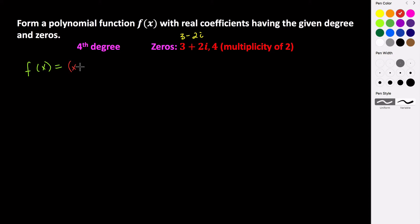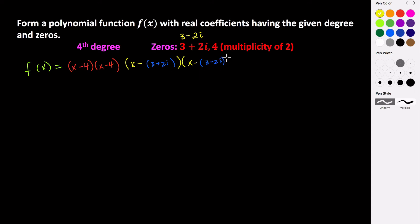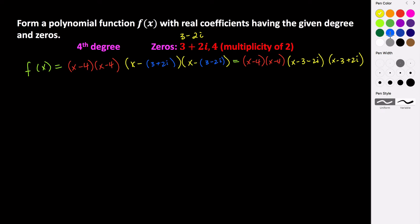Our first factors are going to be (x minus four) times (x minus four) — again, it happens twice because there's a multiplicity of two. And then that's going to be times (x minus (three plus two i)) times (x minus (three minus two i)). When we distribute that negative, it changes the signs, so our last two factors become (x minus three minus two i) and (x minus three plus two i).